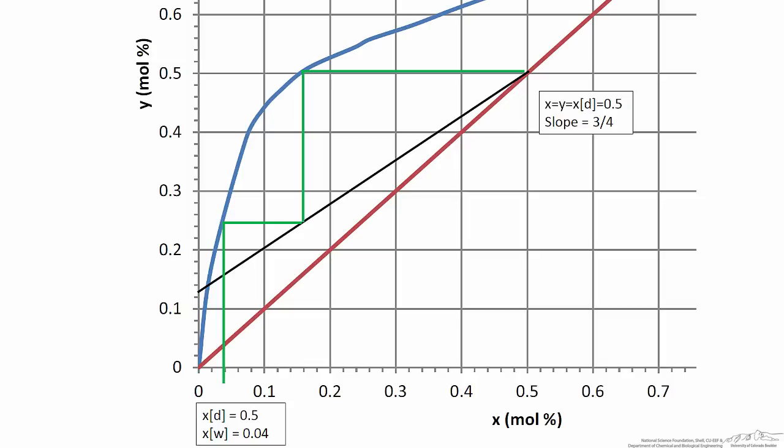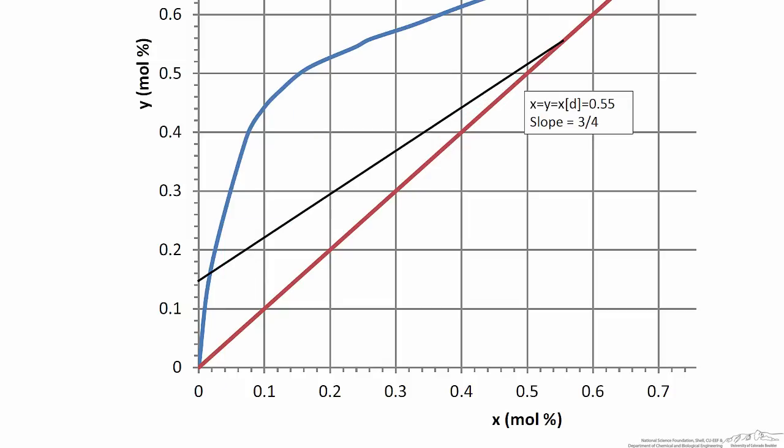If we pick the point in the middle and evaluate the relationship between xD and xW, we repeat the same process. Since our reflux ratio is constant, we still have the same slope for the operating line. But now, with a distillate composition of 55 mol% ethanol, we've translated that line further up the x = y reference line. Stepping off two stages, we see that when xD = 0.55, xW = 0.06.